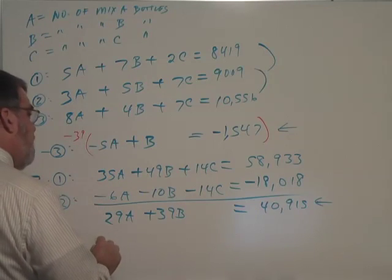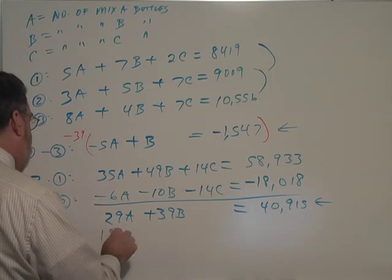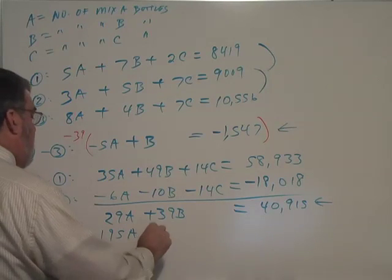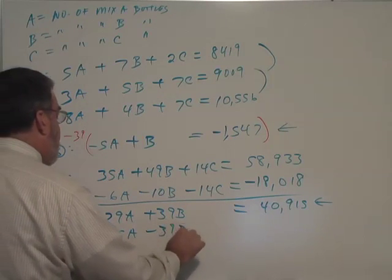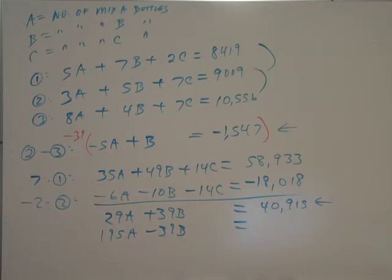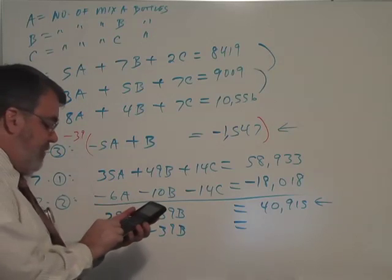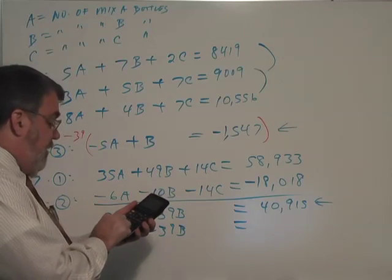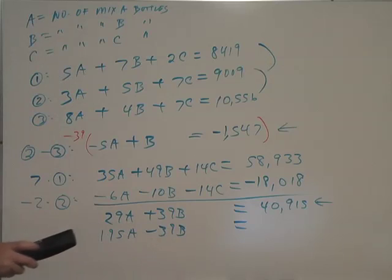So 195A minus 39B equals to, negative times a negative is a positive, negative 39 times 1,547 is 60,333.